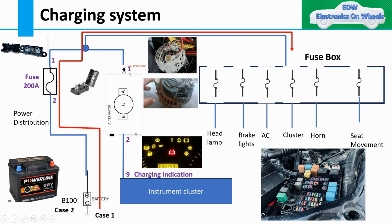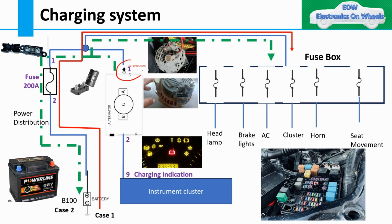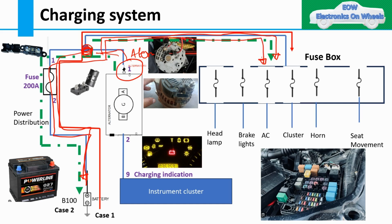Case two: when your alternator is working and your engine has already started. The alternator works only when the engine is running because it is connected to the engine pulley to generate electricity. In this case, from the alternator output, current flows to the fuse box and charges the battery through the splice. Through the splice it also goes to the loads. This is the current flow when the alternator is working.